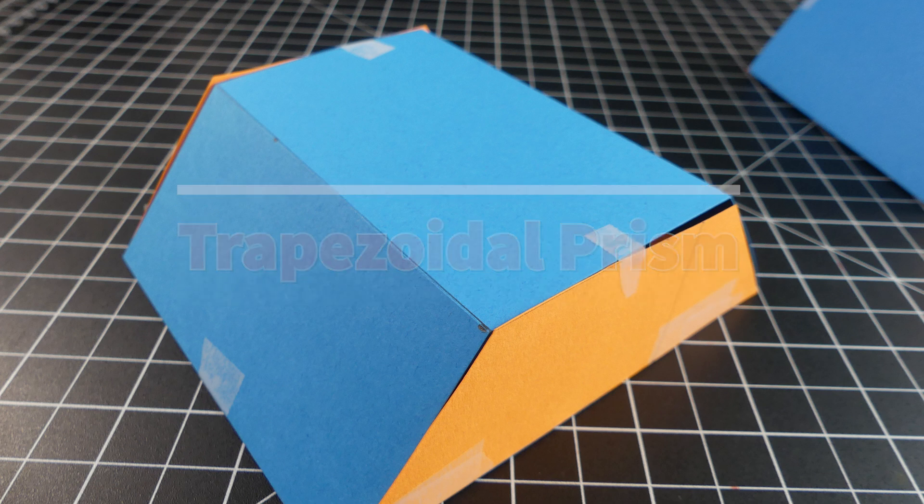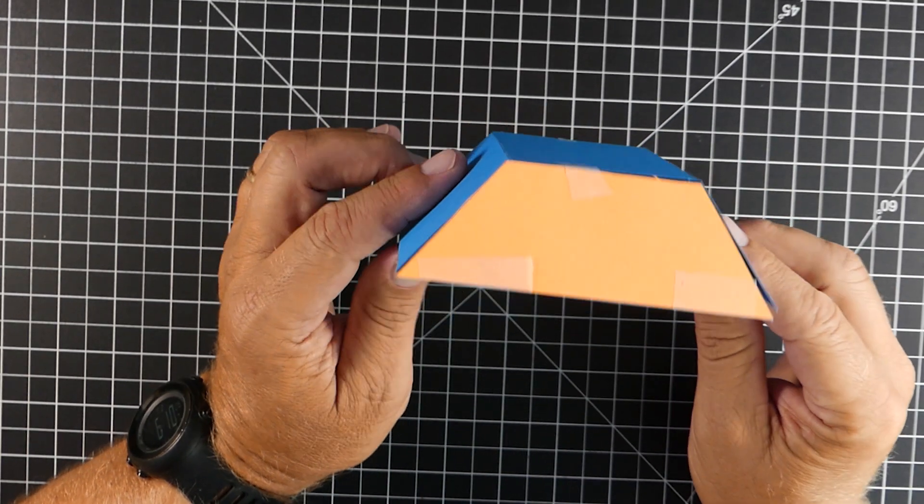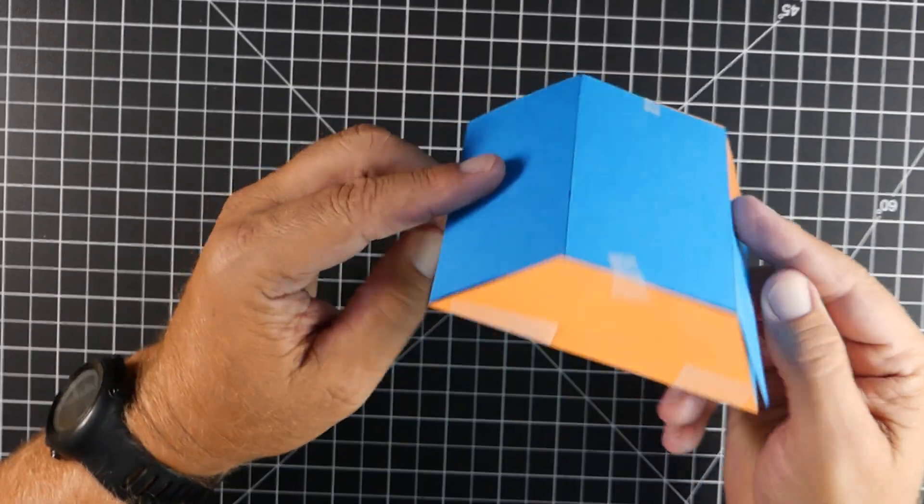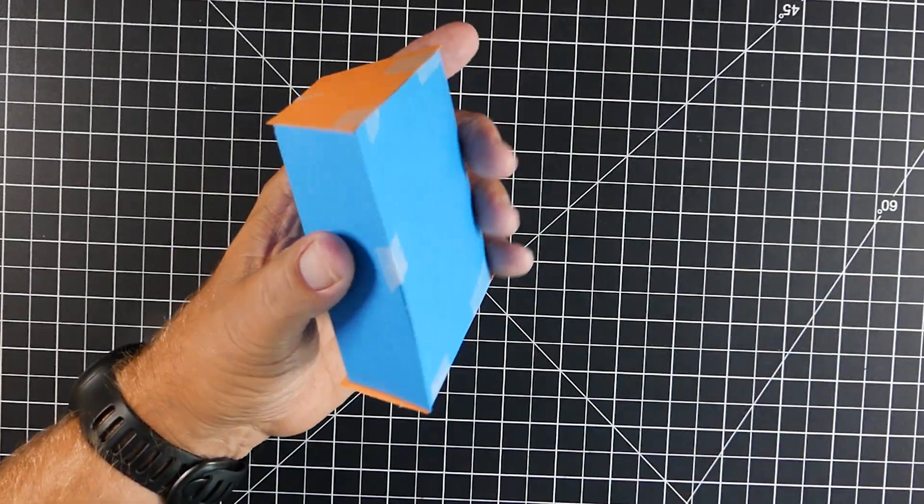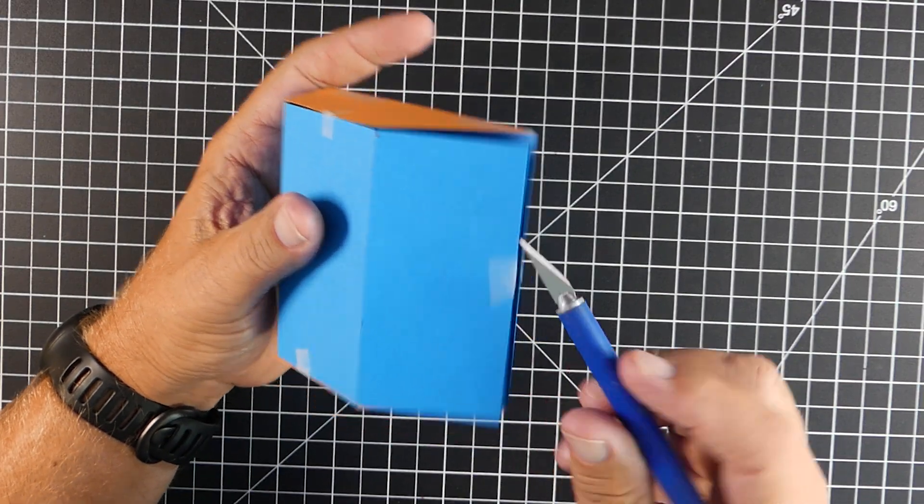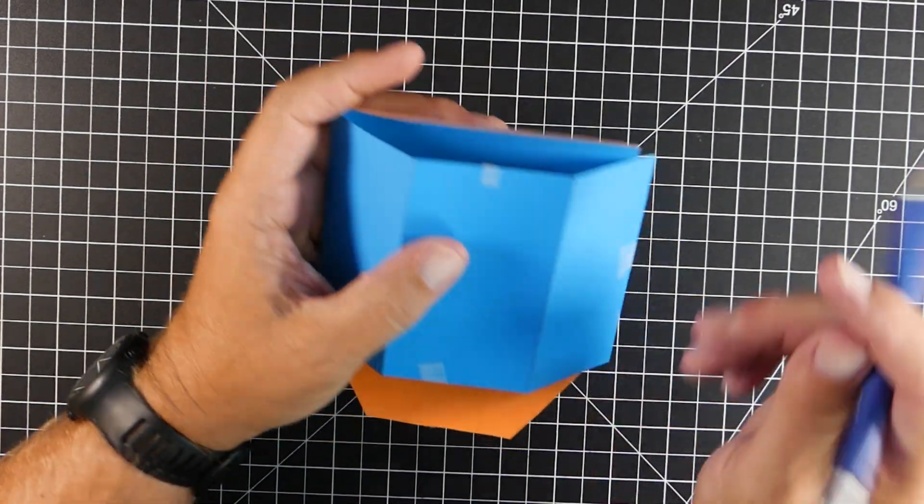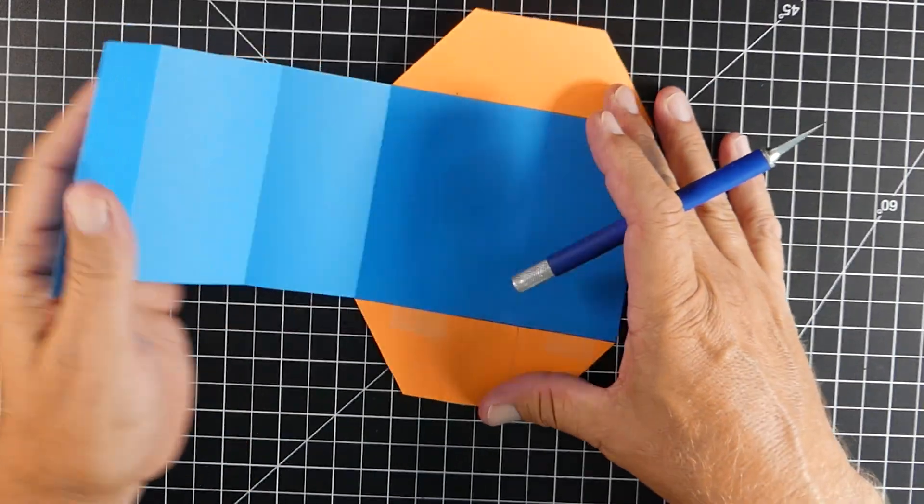Next up is the trapezoidal prism. Okay, much like the other prisms here, you can see the orange is the base. They're the exact same, and they're parallel with each other. So like we've done before, we're going to cut us our net,